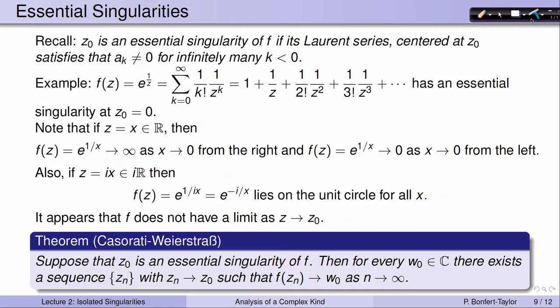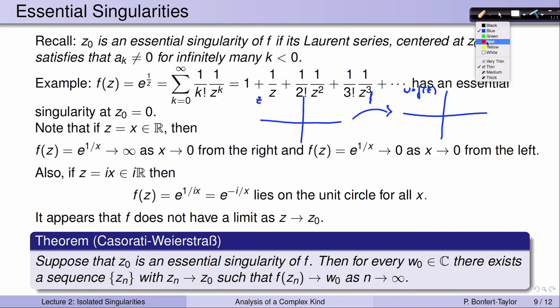Here's a theorem: Suppose that z0 is an essential singularity of f. Then for every point w0 in the complex plane, there exists a sequence z_n converging to the essential singularity such that the function values f(z_n) converge to w0. In other words, pick any point w0 in the w-plane — the theorem says you can find points z_n that converge to z0 such that their images under f converge to w0. And this is possible for any w0 you choose. So not only does f not have a limit as z approaches c0, but f's values spread out as it does so.